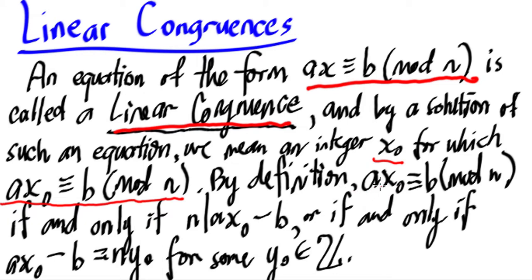a times x sub 0 is congruent to b mod n if and only if n, the modulus, divides ax sub 0 minus b, or if and only if what amounts to be the same thing, ax sub 0 minus b equals ny sub 0 for some y sub 0 in the integers.